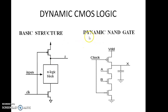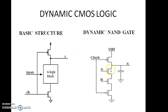For example, dynamic NAND gate. NAND means A·B all bar. So here the N logic block for NMOS — multiplication means series — so A and B are connected in series. This is the dynamic NAND gate.